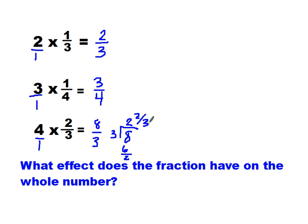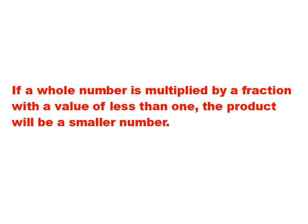So if I wanted to answer the question, what effect does the fraction have on the whole number? Take a look at the fraction and then at our product. Each time my number is decreasing. What effect does the fraction have on the whole number? It causes it to decrease. Because if a whole number is multiplied by a fraction with a value less than 1, the product will be a smaller number. If I take something less than 1 time, I'm not taking the whole thing. So if a whole number is multiplied by a fraction with a value less than 1, I'm going to end up with a smaller number, because I haven't taken it a whole time.